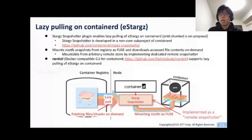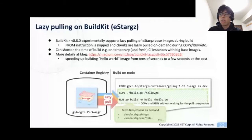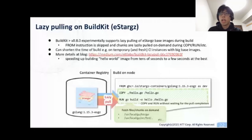Nerdctl — a Docker-compatible CLI for ContainerD by Akihiro Suda — supports lazy pulling of eStargz. BuildKit version 0.8.0 starts to experimentally support lazy pulling of eStargz. During build, if a base image is formatted as eStargz, BuildKit doesn't pull it — necessary chunks are lazily pulled from the registry on demand during executing instructions like COPY and RUN. This can shorten build time when getting base images from the registry — for example, when building images on temporary fresh VM instances in CI, we don't need to download the entire image contents. This is reported to speed up building a hello world image from tens of seconds to a few seconds at best.